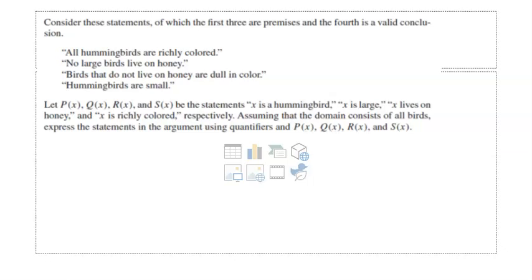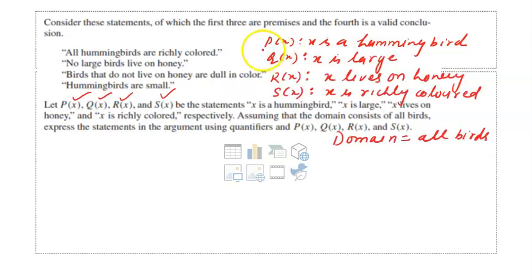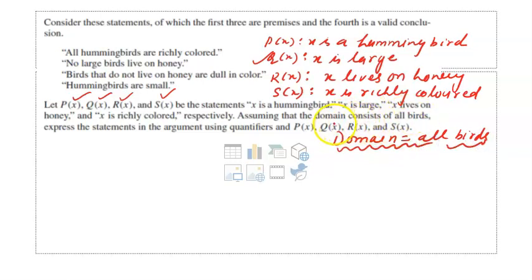In the next question, there are four statements: px — x is a hummingbird; qx — x is large; rx — x lives on honey; and sx — x is richly colored. The domain consists of all birds. We have to translate the given statements using these predicates and quantifiers.